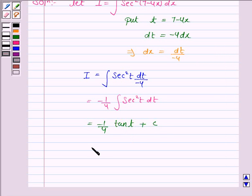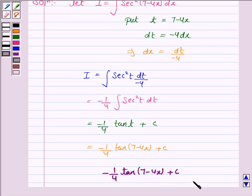Now substitute the value of t here. So it becomes tan 7 minus 4x plus c. Hence the integral of the given function is minus 1 upon 4 tan 7 minus 4x plus c.